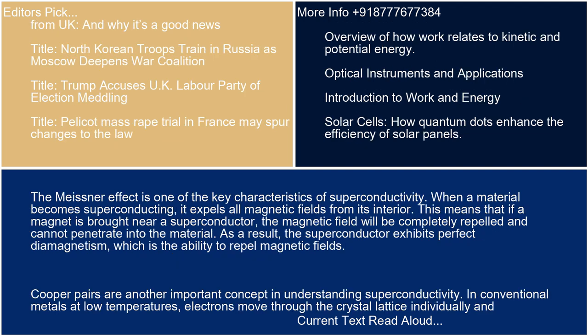The Meissner effect is one of the key characteristics of superconductivity. When a material becomes superconducting, it expels all magnetic fields from its interior. This means that if a magnet is brought near a superconductor, the magnetic field will be completely repelled and cannot penetrate into the material.